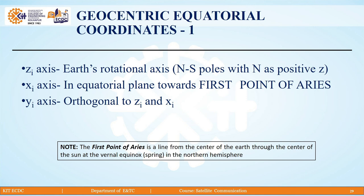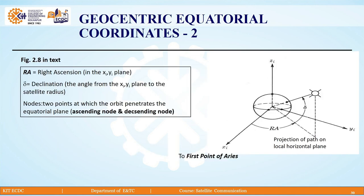Note that the first point of Aries is the line from the centre of the earth through the centre of the sun at the vernal equinox, that is spring in the northern hemisphere. A figure shows the xi, yi, and zi axes, and you can also see the first point of Aries. The term Ra is the right ascension, which lies in the xi-yi plane. Delta is the declination — the angle from the xi-yi plane to the satellite radius.